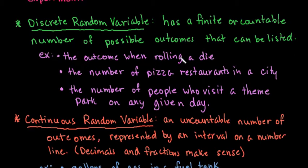For example, the outcome when rolling a die. You only have six possibilities when rolling a die, so there's only six outcomes that are possible. But every time you roll the die, you get a different number. The first time you might get a two, and then you might get a three.